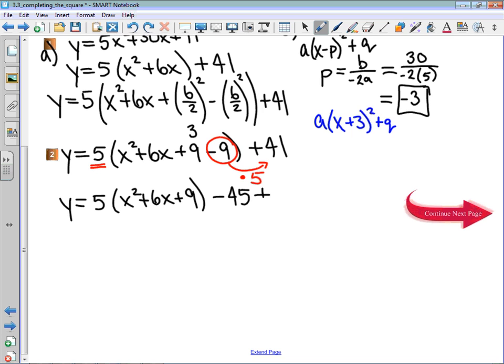Plus the 41 that was already there. And now I can factor my perfect square trinomial. It's going to be 5 times x plus 3 squared minus 4. Now I'd like to point out that this gave us what we predicted.